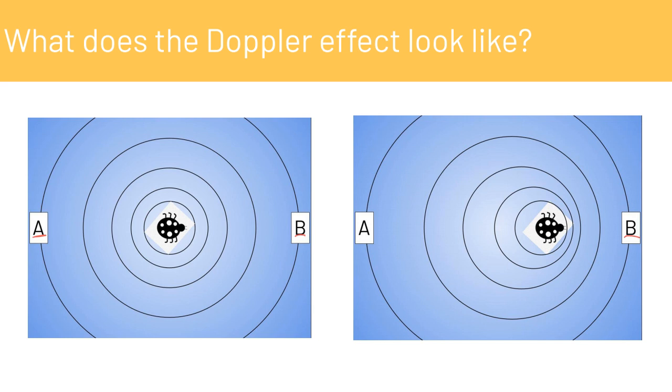So B now sees the waves coming more frequently than A does. The space between the waves for A is much greater than the space that B sees the waves coming at, because the bug is moving towards B.